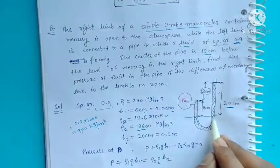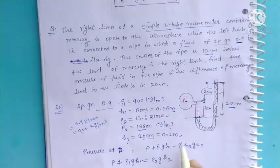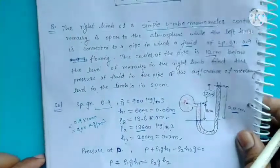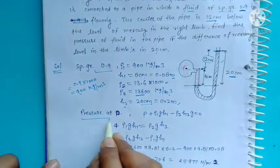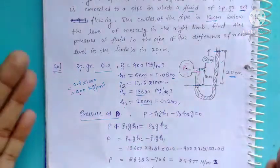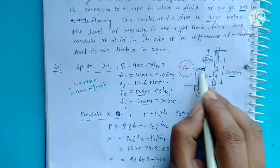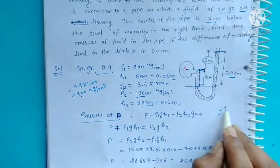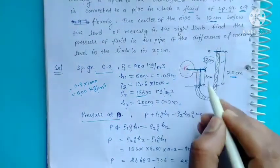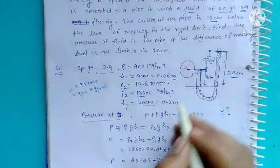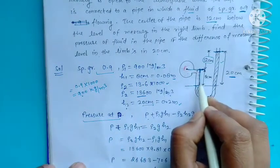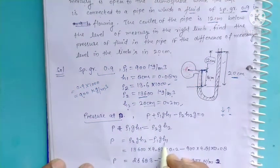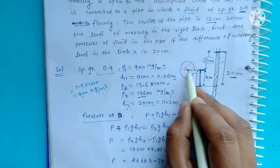Mercury की height h₂ = 20 cm = 0.2 m। अब pressure निकालते हैं point P पर। जो process है उसको ध्यान से देखेगा: हम उस level से start करेंगे जहाँ से pressure निकालना है। नीचे की तरफ जाते हुए plus लेते हैं, ऊपर की तरफ जाते हुए minus लेते हैं।